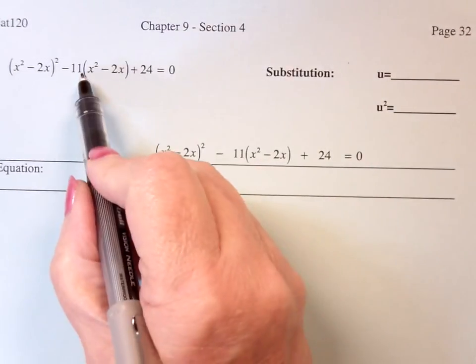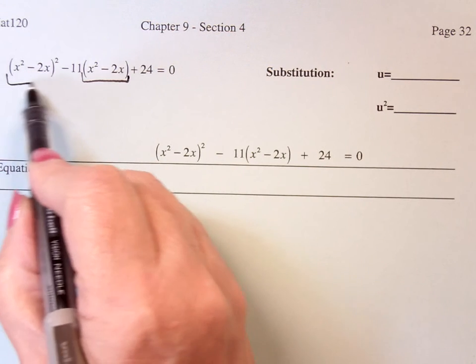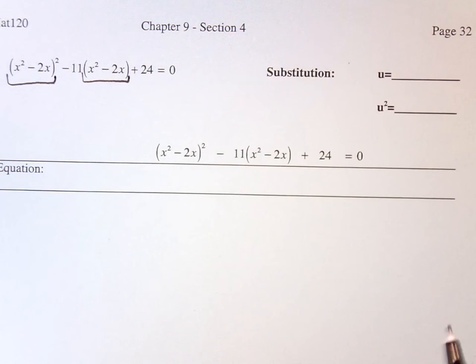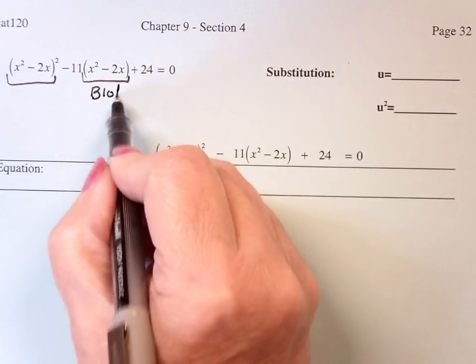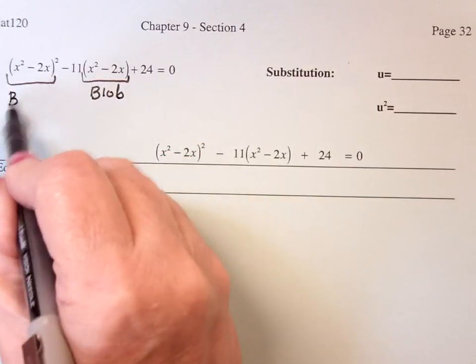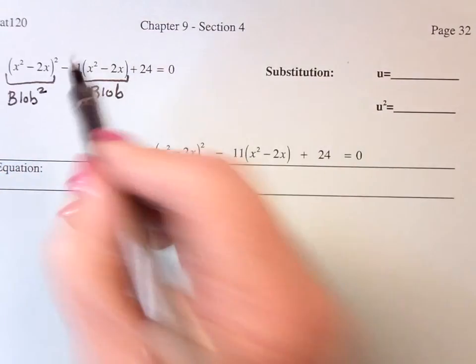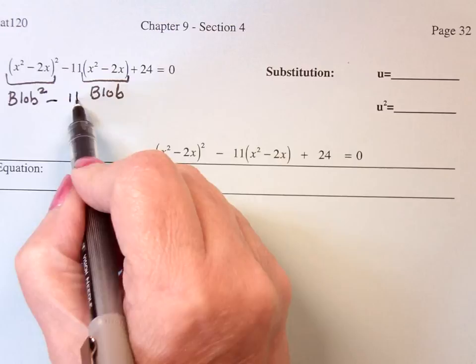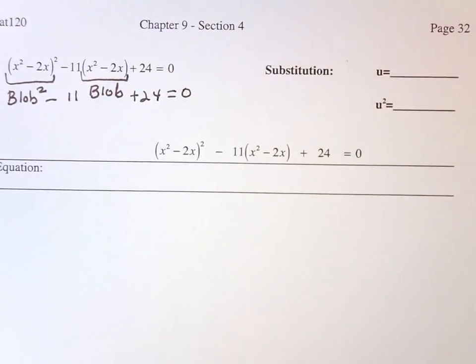Again, if I look at the original problem, there's the center set of parentheses, and I notice that same set of parentheses squared. So if this guy is a blob, this guy is a blob squared. So I have blob squared minus 11 times the blob plus 24 equals 0. Visually, that's what I see.